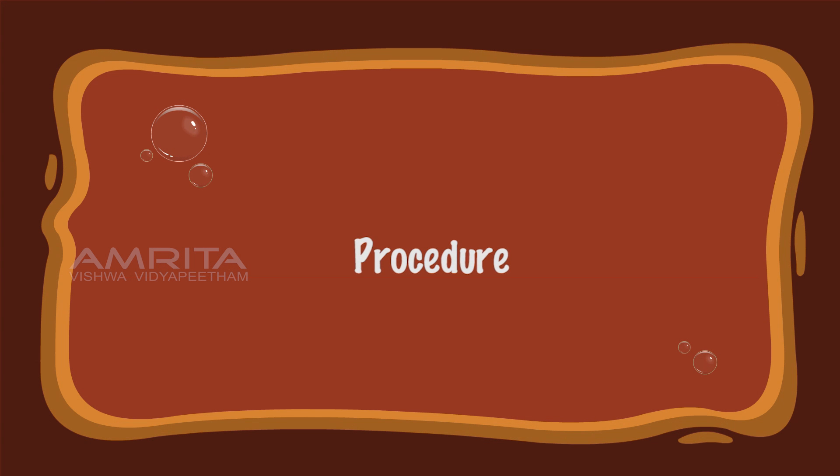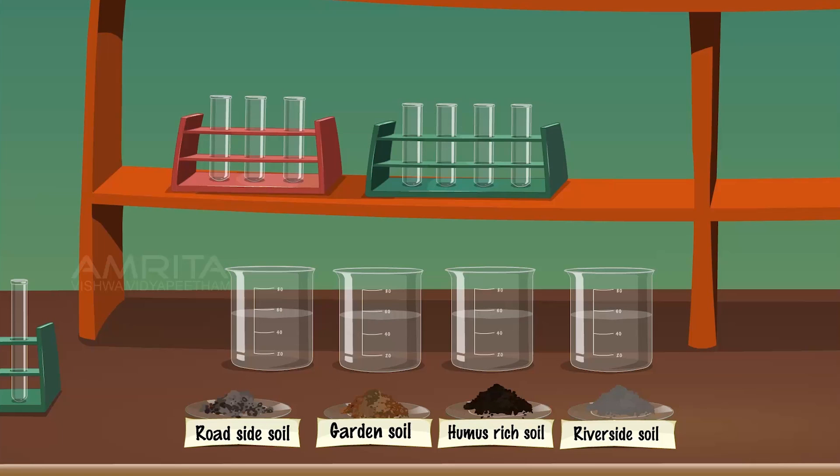Procedure: Let's first prepare the soil solution. Take roadside soil from the watch glass and dissolve it into the beaker containing water to make soil solution.